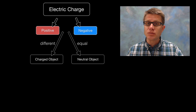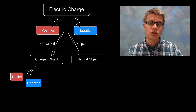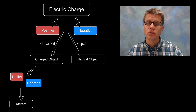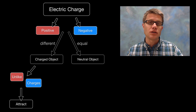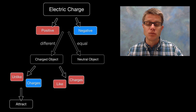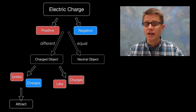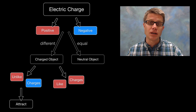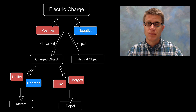Now let's say I bring two objects next to each other that have different charges. There will be an attractive force between the two. But if we take two objects that have the same charge — that could be both positive or both negative — they are going to repel each other.